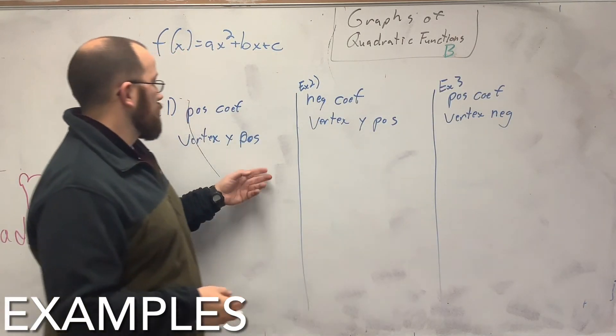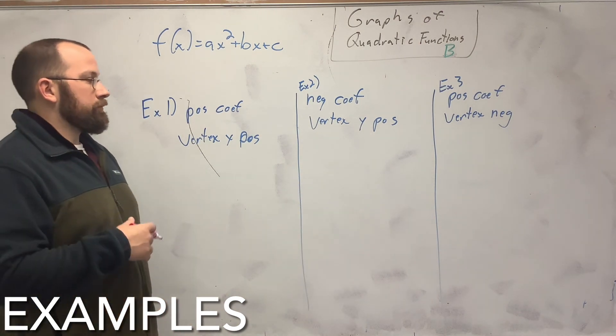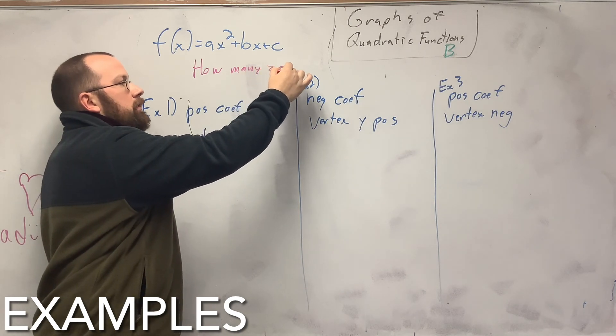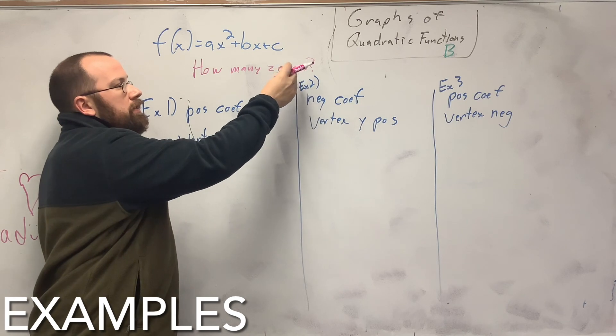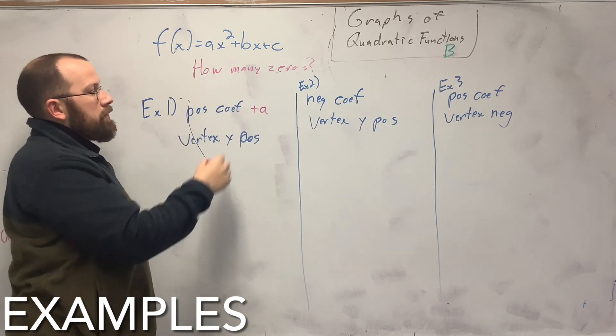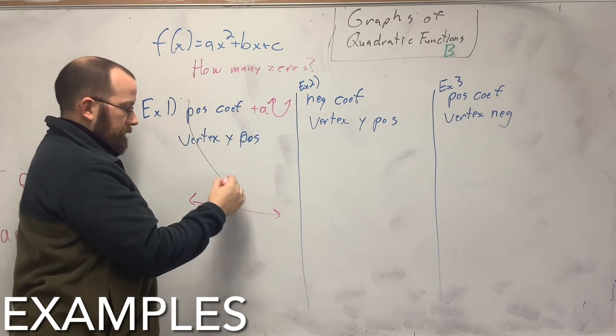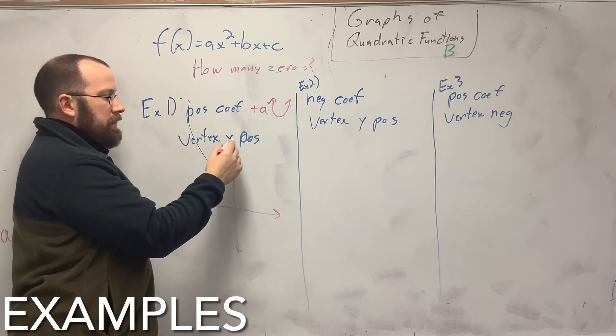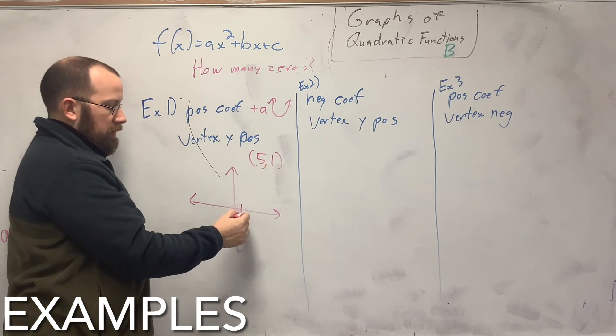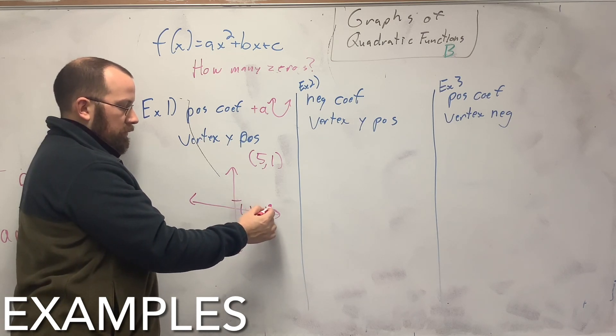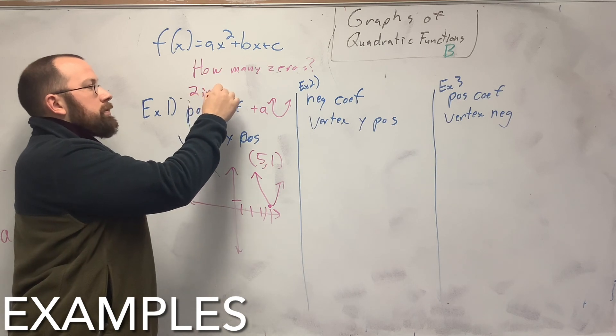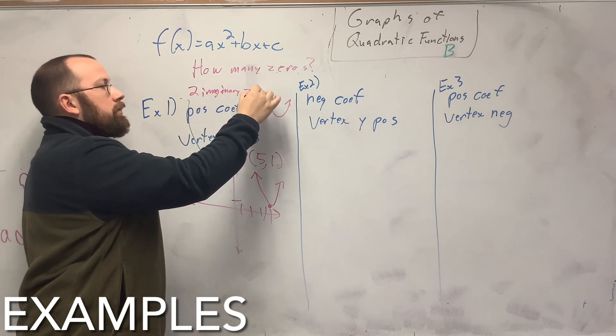Here are three of the ones we just did to see how many zeros each has. That's basically what we're finding. So how many zeros? If I have a positive coefficient, so that means my A is positive. That means I have a smiley face. And my vertex y is positive. So if I have (5, 1), so that vertex number is positive, so it's right there. How many zeros do I have? I have two imaginary zeros, or zero real.